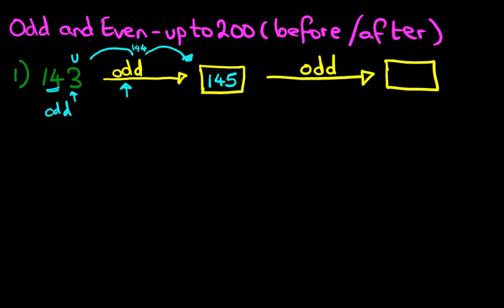And the odd number after that — well, we do the same thing again. We take two jumps. From 145, count forward by one: it's 146. The next one going forward is 147. So all we've done is started at 143, and because that was an odd number and the question asks for the next two odd numbers, we counted forwards by two: 143, 145, 147. And that is correct — we're going to give that a nice big tick.